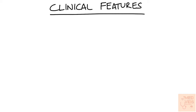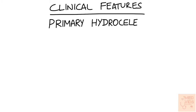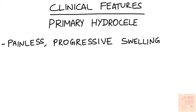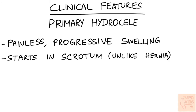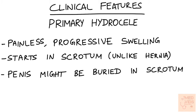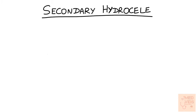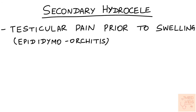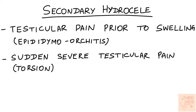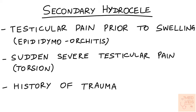Now let's see some clinical features of hydrocele. In cases of primary hydrocele, the swelling usually grows to a large tense size and it is typically painless and gradually progressive. The swelling starts in the scrotum in case of hydrocele — this differentiates it from hernia, which is an inguinoscrotal swelling starting from the inguinal region and descending into the scrotum. In large hydrocele cases the penis might be buried in the scrotum. Secondary hydrocele is usually a small lax swelling; there can be history of testicular pain as in epididymo-orchitis, sudden severe testicular pain as in torsion (common in young males), or history of testicular trauma.